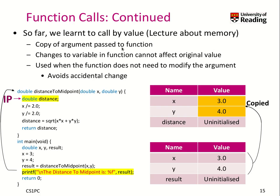Our next topic is function calls. So far, we learned to use call by value, which means we copy the arguments passed to the functions. Here we see the example — we have our distance to midpoint function, where we have two formal arguments, x and y, and we fill those two arguments with actual values, 3 and 4. When we call the function, those values get copied into the stack frame of the distance to midpoint function. If I modify them, any change will be local to that function because it's a copy. This provides some isolation and avoids accidental change of program state, like the values of x and y in the main function.